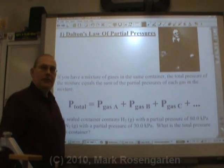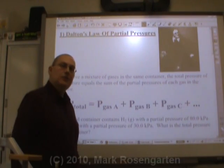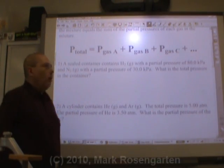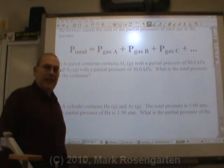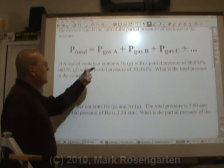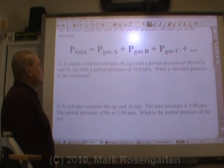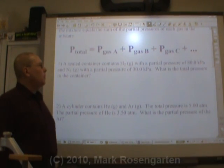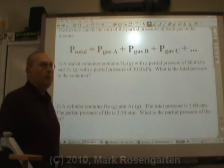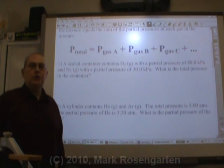It goes a little deeper than that, though, because there's other applications we can put this to. A sealed container contains H2 gas with a partial pressure of 80.0 kilopascals and nitrogen gas with a partial pressure of 30.0 kilopascals. What is the total pressure of the container?